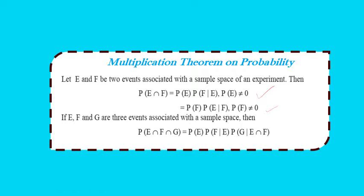In case of three events, if E, F, and G are three events associated with the same sample space, then P(E∩F∩G) = P(E) × P(F|E) × P(G|E∩F). Please pause and note down this point.